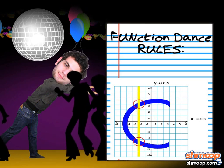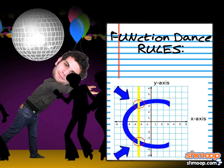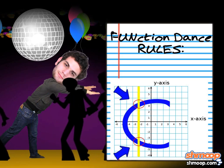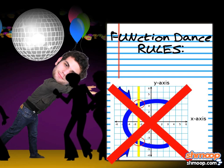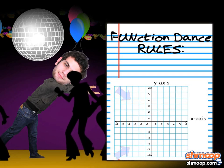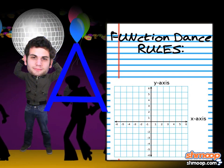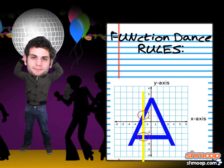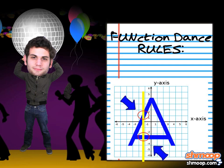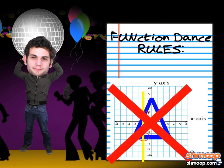Then the C. Your vertical line touches the graph more than once — it's not a function. Finally, the A. Your vertical line touches the A more than once, so it's not a function.